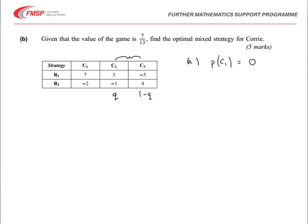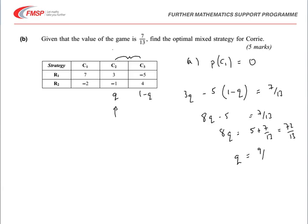The expected gain would come from 3Q, if we take this one here, 3Q and then minus 5 times 1 minus Q. And that will be equal to the value of the gain 7 over 13. So if we calculate that, we end up with 8Q minus 5 equals 7 over 13. And so 8Q equals 5 plus 7 over 13. Well, 5 is 65 thirteenths, so in total we've got 72 over 13. And therefore dividing through by 8, Q equals 9 over 13.